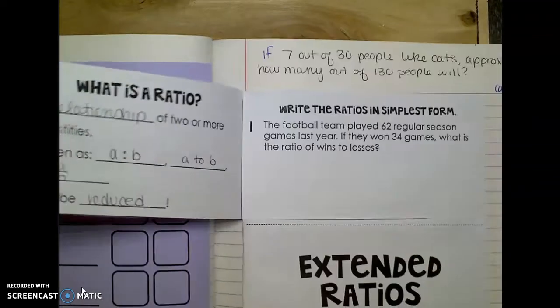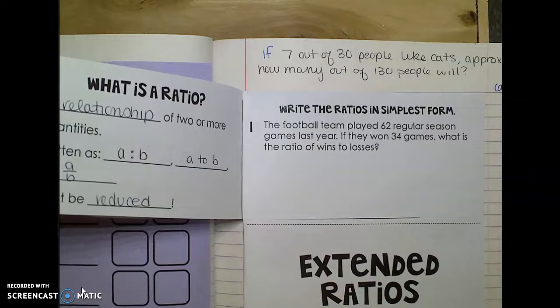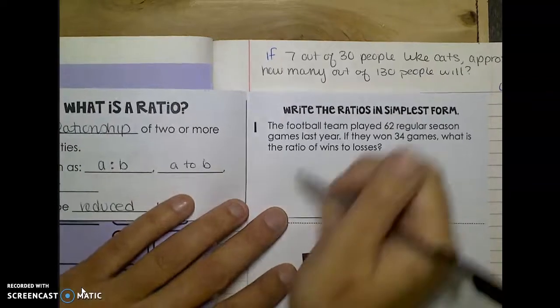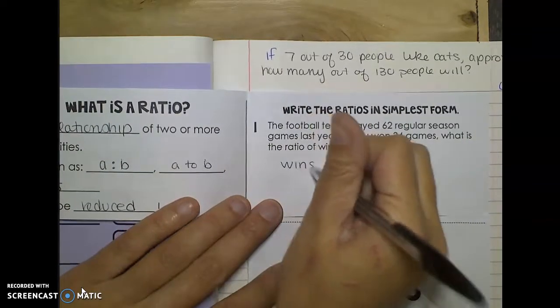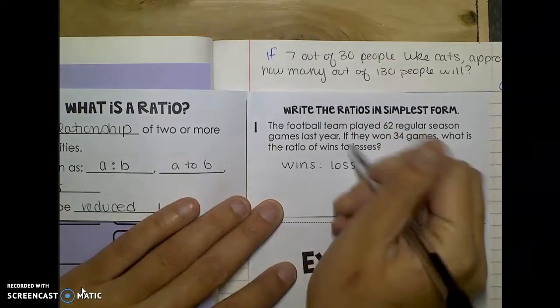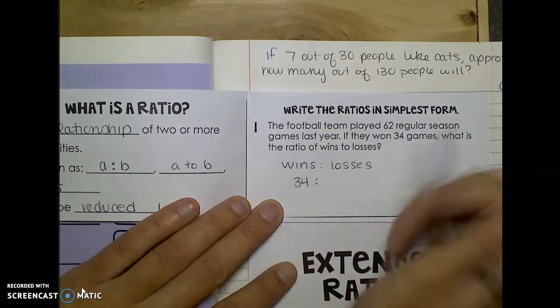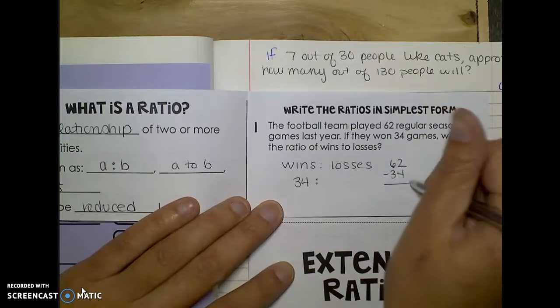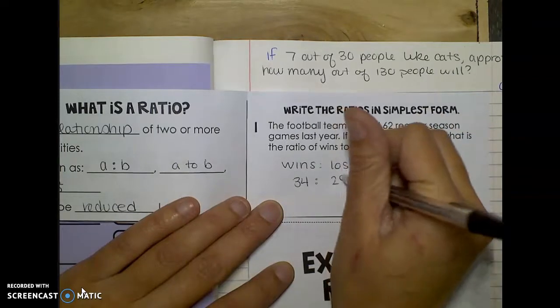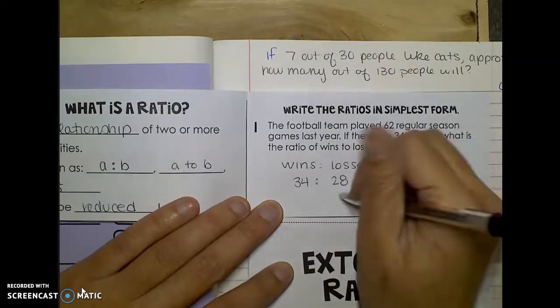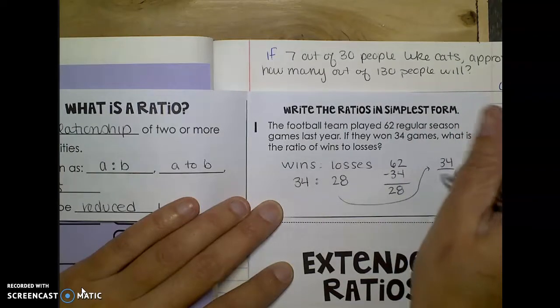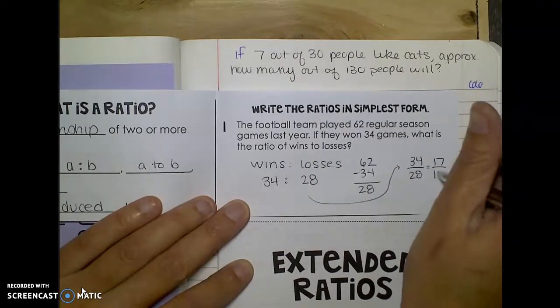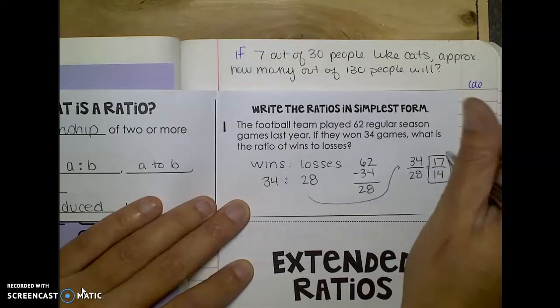So an example of that could be: the football team played 62 regular season games last year. If they won 34 games, what is the ratio of wins to losses? So we want to write the ratio wins to losses. I know that they won 34 games, but I don't yet know how many losses. I think I have to do 62 minus 34 to get that, which is going to be 28. We'd have 34 to 28, which I'd rather write as a fraction, and then we should reduce, which it'll definitely reduce by 2. So 17 over 14 is our ratio of wins to losses.